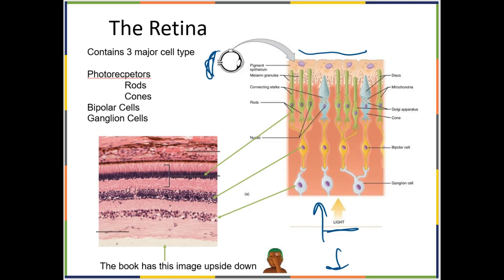The three cell layers are ganglion cells, bipolar cells, and photoreceptors — your rods and cones. Light has to pass through the ganglion cells and the bipolar cells before it can hit your photoreceptors. The photoreceptive parts of the photoreceptors, the region that actually contains the photoreceptive pigments, is at the back. In this slide, light comes from one direction and passes past the nuclei of the ganglion cells.